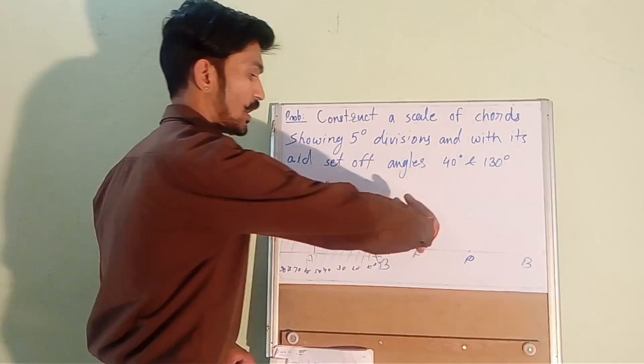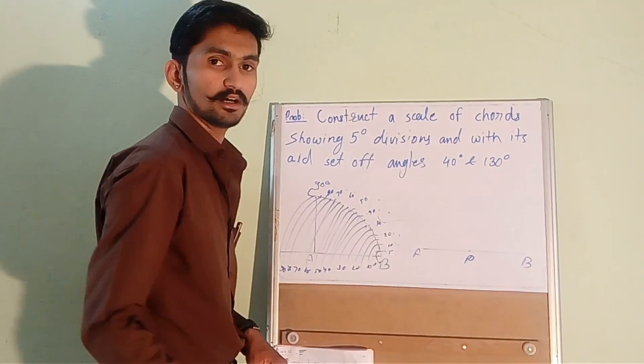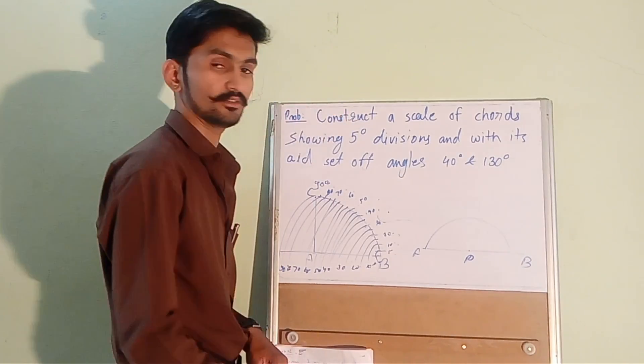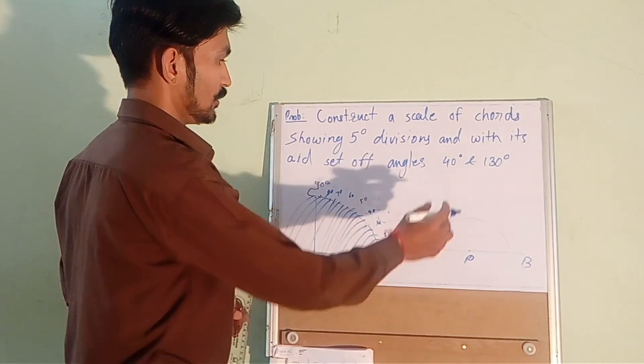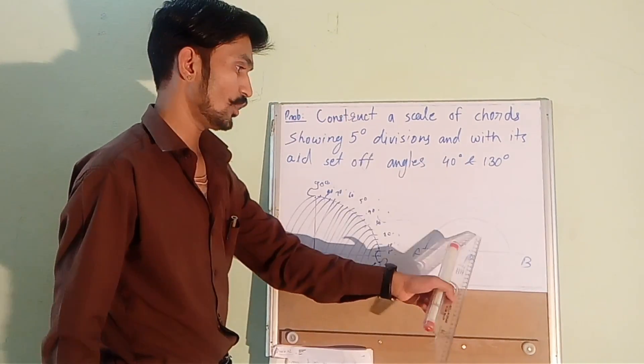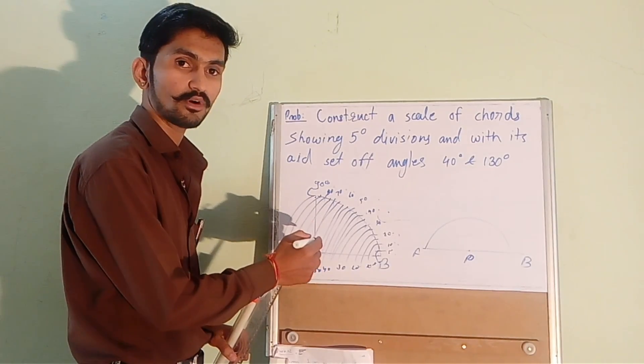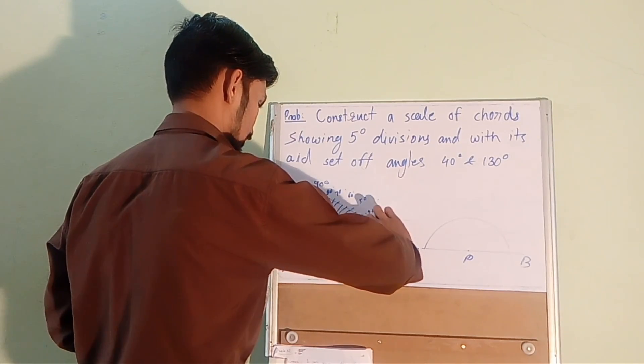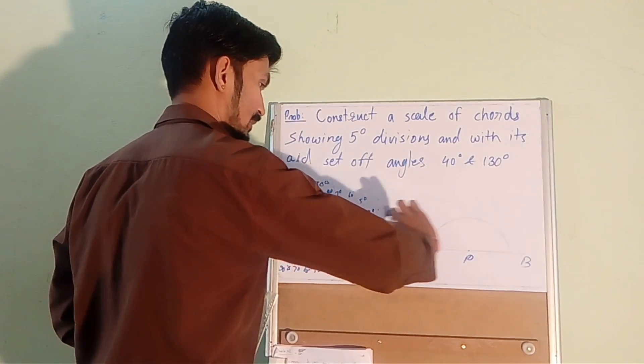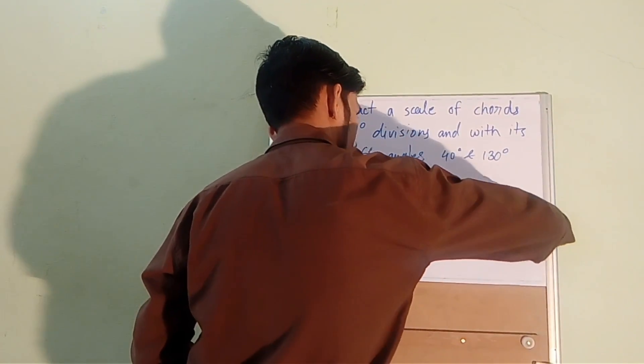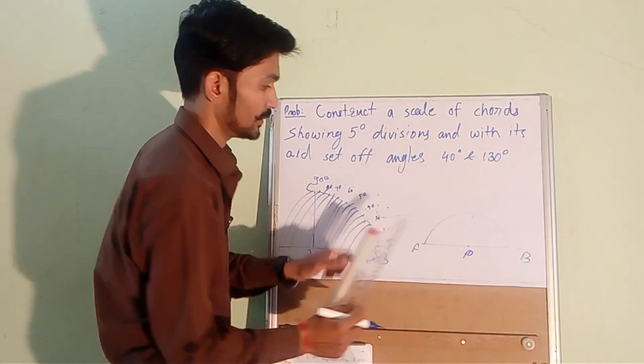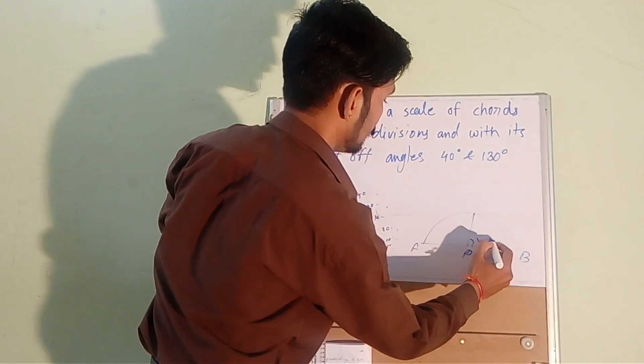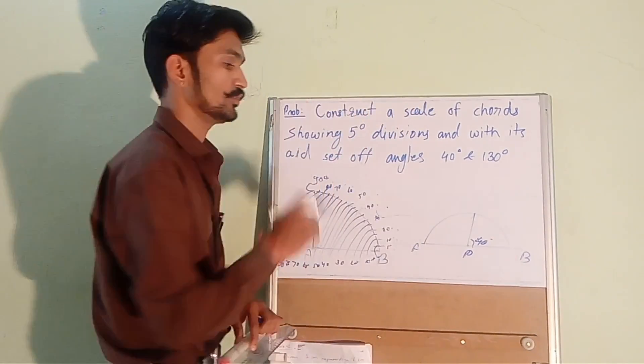Now draw an arc cutting AB of let's say 60 degree. So we have drawn an arc. Now if you want to show 40 degree on this line using this scale of chord, what you need to do is open your divider and measure 40 degree from B and put it here and cut an arc of 40 degree. Now from this point join P and this is 40 degree according to your scale of chord.